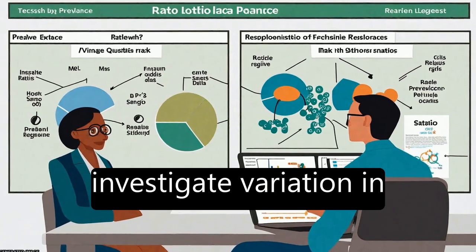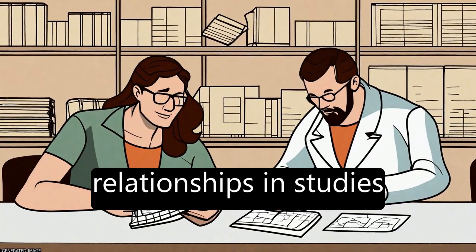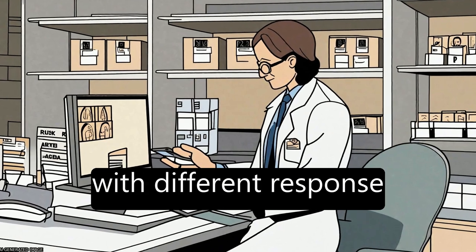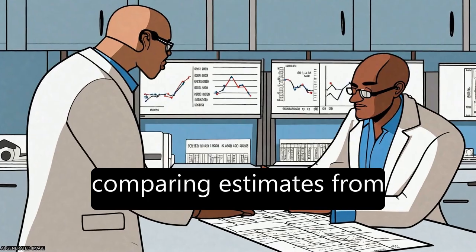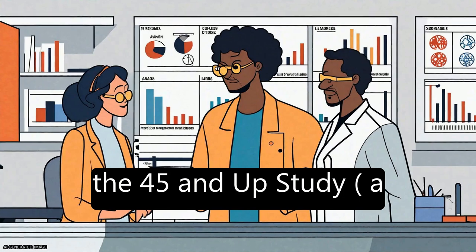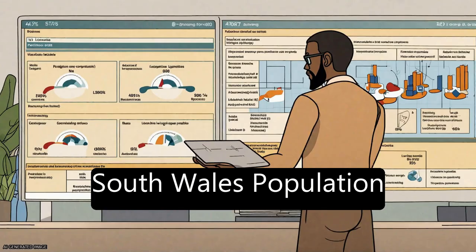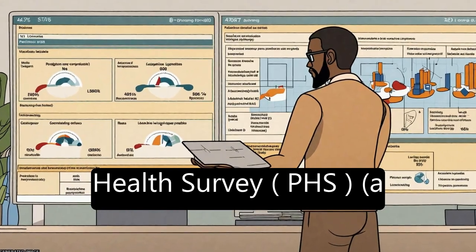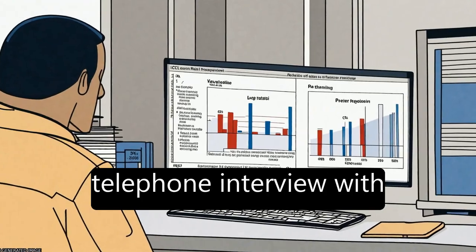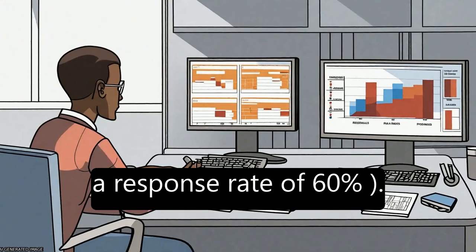This study aimed to investigate variation in exposure-outcome relationships in studies of the same population with different response rates and designs by comparing estimates from the 45 and Up study, a population-based cohort study with a response rate of 18%, and the New South Wales Population Health Survey (PHS), a computer-assisted telephone interview with a response rate of 60%.